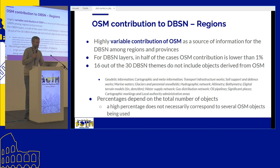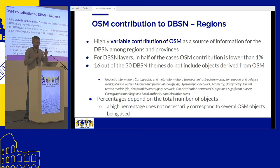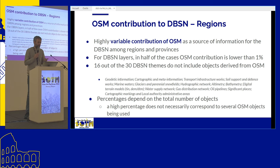Looking at the lower level of hierarchy in the data model, we see more or less the same patterns with higher variability. We have a highly variable contribution of OSM as a source, which depends both on OSM data availability in that region and how rich the official regional information was. Half of the categories have almost no contribution from OSM, and roughly half of the themes include no objects derived from OSM. Be aware that the percentages — 100% or 50% — depend on the total number of objects. A high percentage does not necessarily correspond to many objects, since for one region there might be only 100 elements, all from OpenStreetMap.